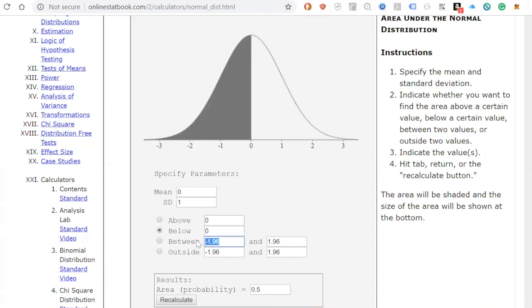Let's look again at the area between one and two standard deviations above the mean. And again, you see that is 13.6% or 0.1359.